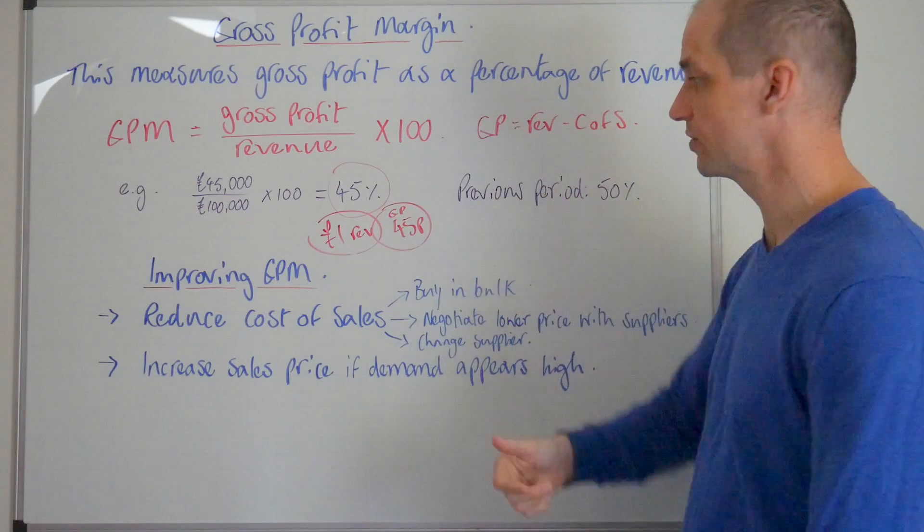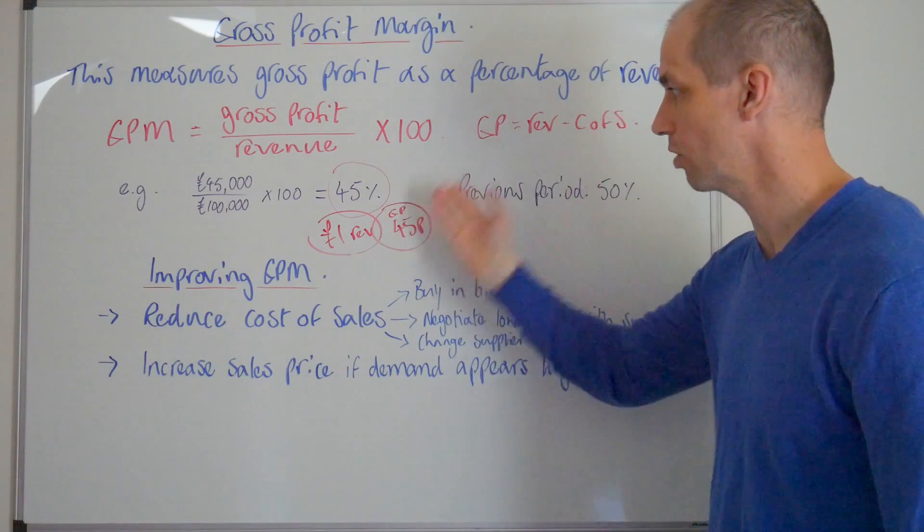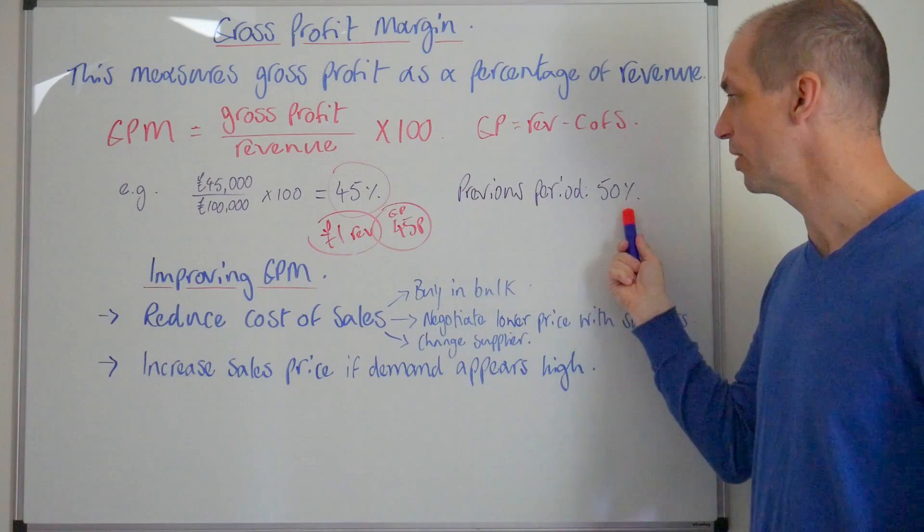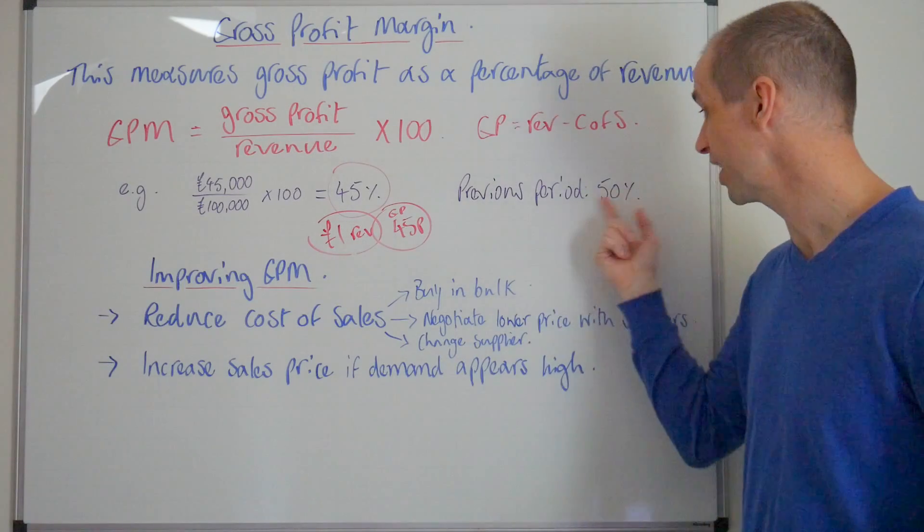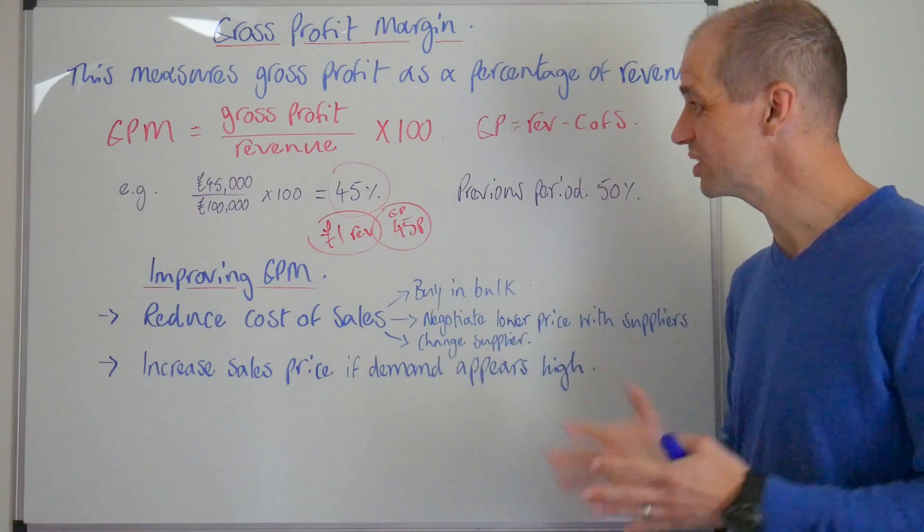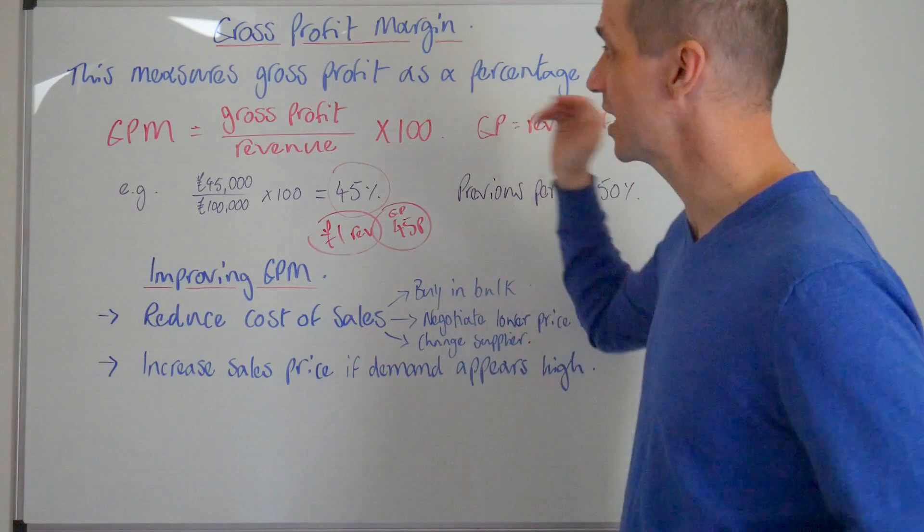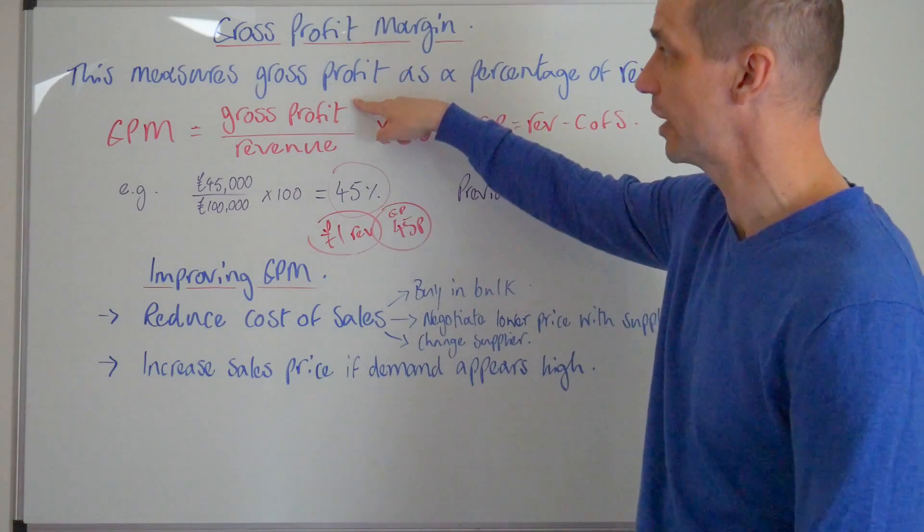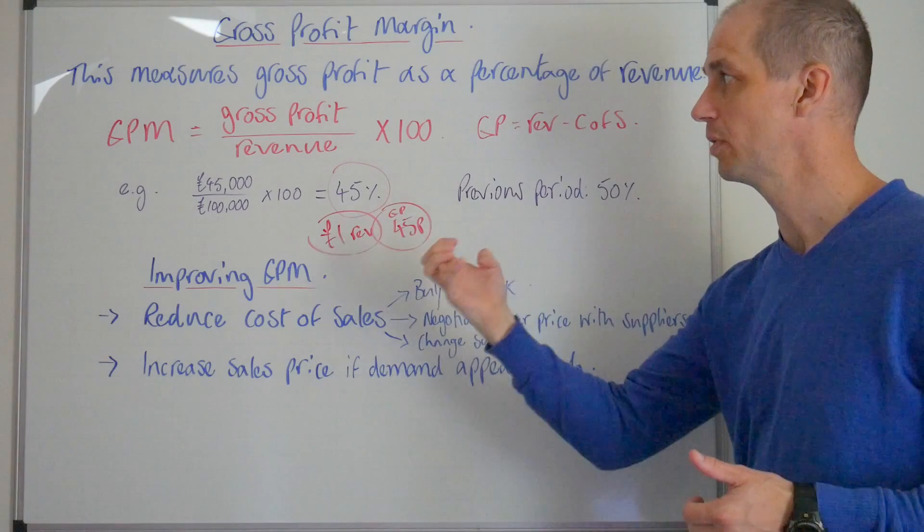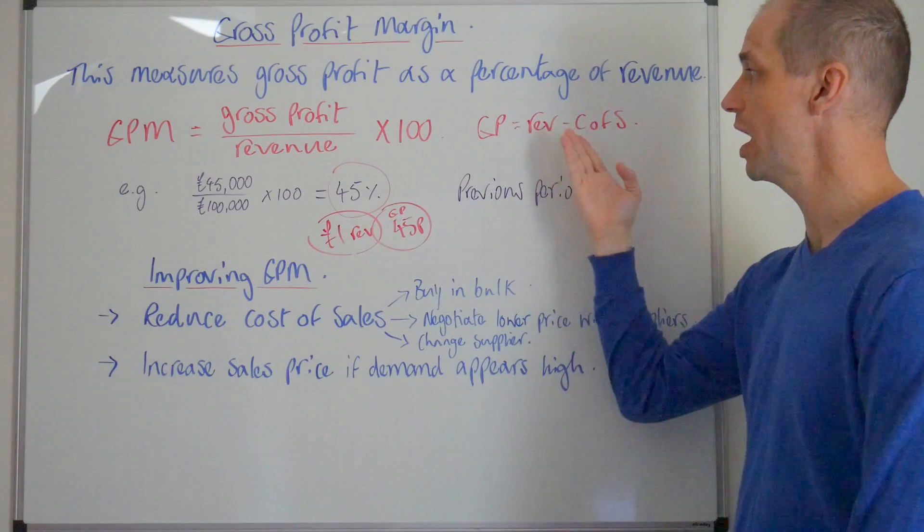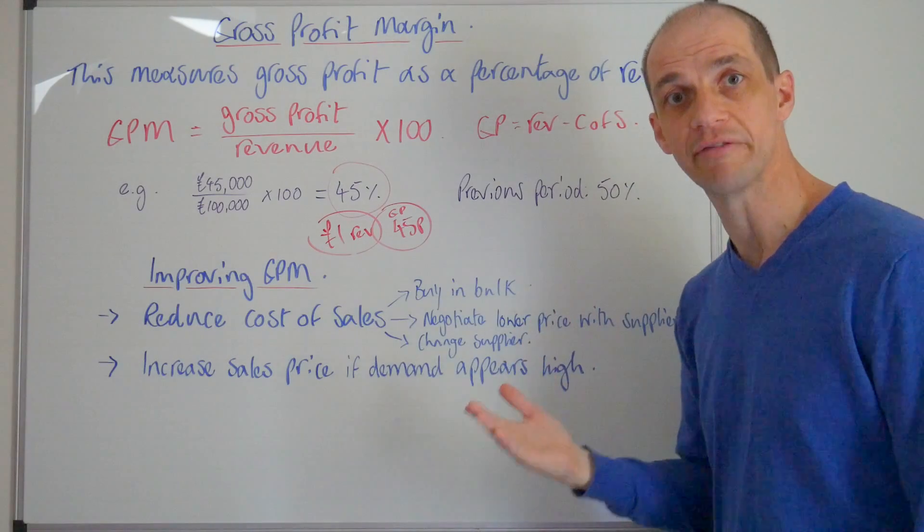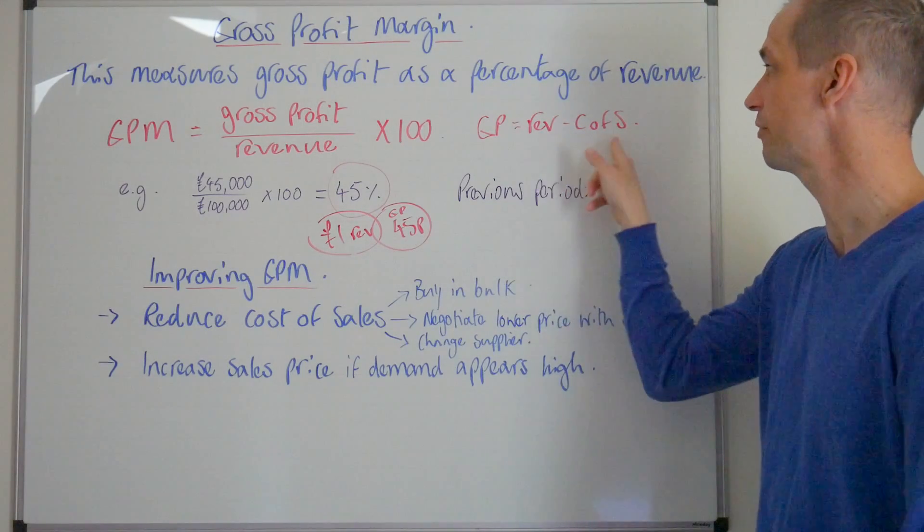We've got a cost of sales effectively running at 55%, our gross profit margin is 45%, but in the last period this business actually maintained a gross profit margin of 50%. So what does that tell us? Well quite clearly it tells us that the gross profit is lower in relation to the actual money coming into the business than it was in the previous period, and the cost of sales is clearly therefore higher because that is the big difference here.